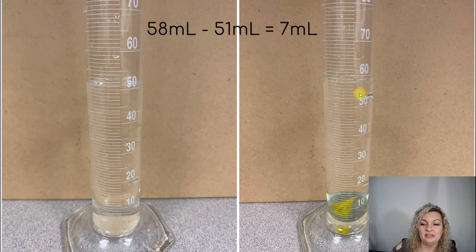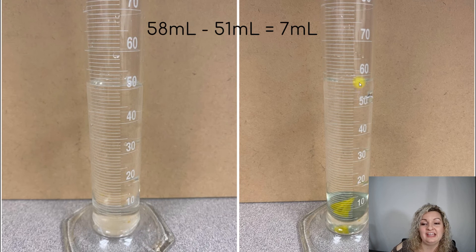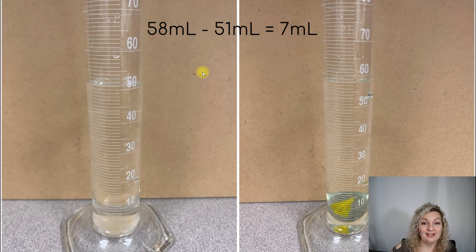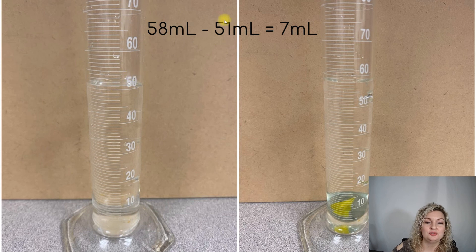If we go over here, we can see here's the 55 mark. So 56, 57, and 58 is where our meniscus is. So in order to find the water displacement of this marble, we do final, which is 58 milliliters, minus the initial, which was the 51, and we're going to get 7 milliliters for this marble.